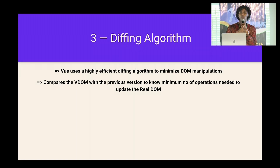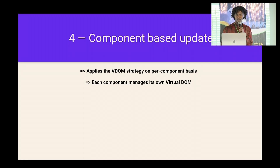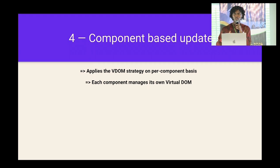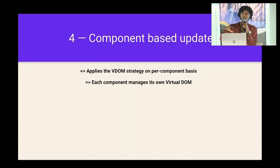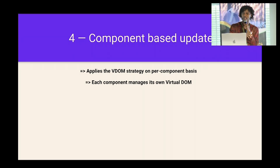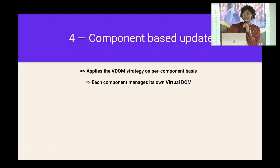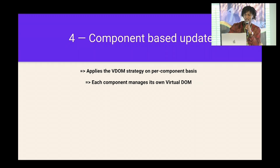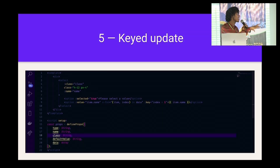We have the diffing algorithm, which helps to minimize DOM manipulation. It compares the virtual DOM with the previous version to determine how many operations are needed to update the real DOM. We also have component-based updates. For every component in a Vue application, that component has its own DOM. With the help of components, you can apply the virtual DOM strategy on each component — each component manages its own virtual DOM, so whatever goes on in component A does not affect the actual DOM directly.